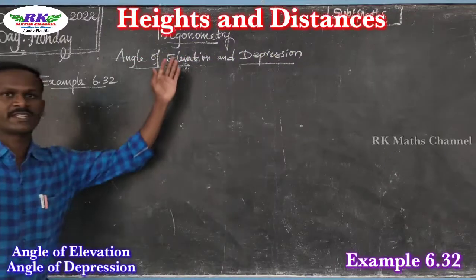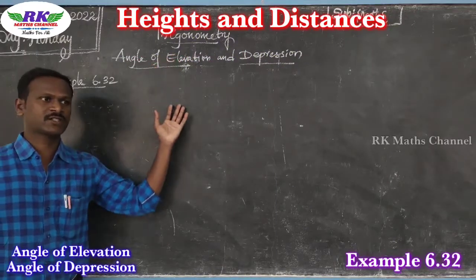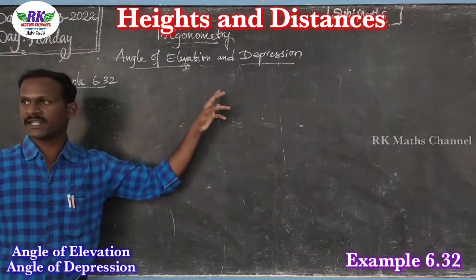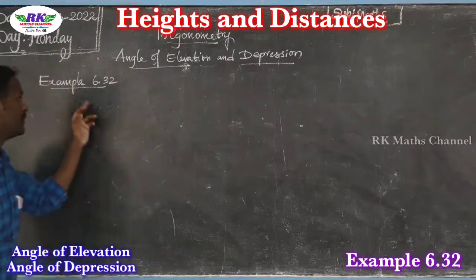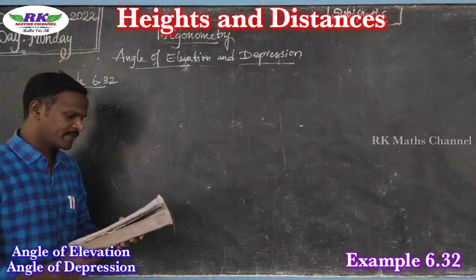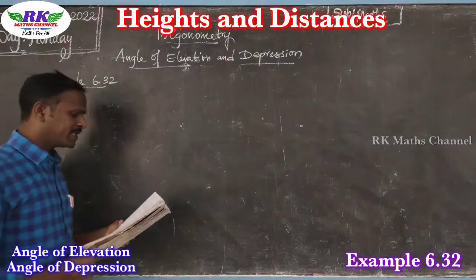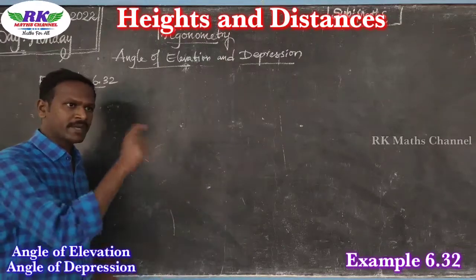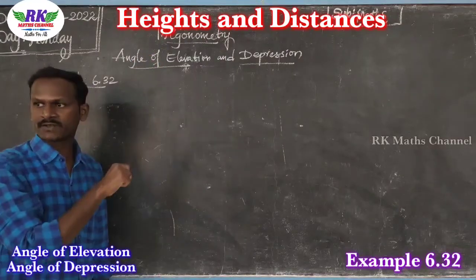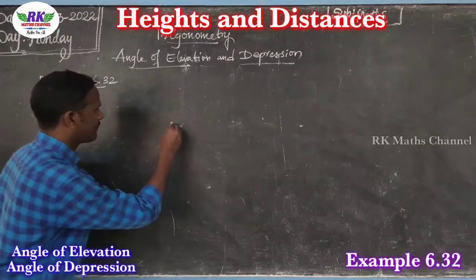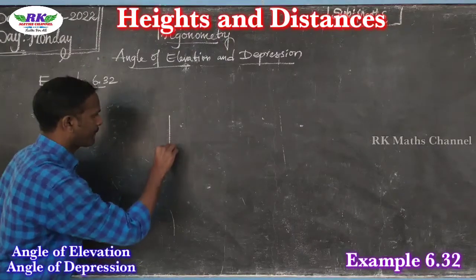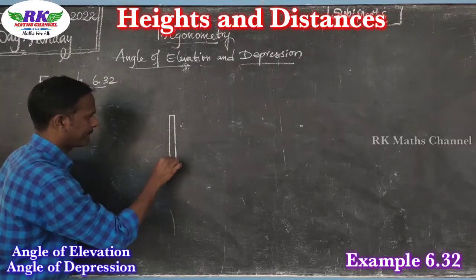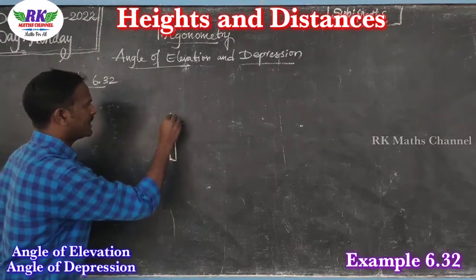Today's topic is trigonometric heights and distances — angle of elevation and depression. Example 6.32: a pole is 5 meters high and it is fixed on the top of a tower.